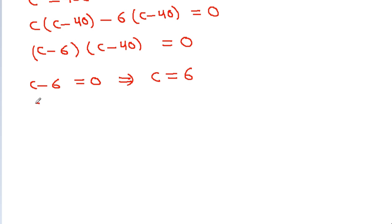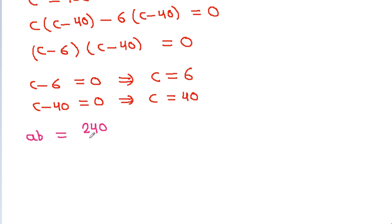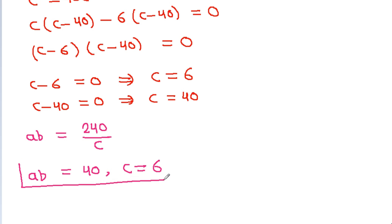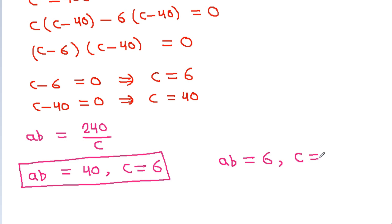From C minus 40 equals 0, C is equal to 40, and from C minus 6 equals 0, C is equal to 6. When C is 6, AB equals 240 by 6 which is 40. When C is 40, AB equals 240 by 40 which is 6.